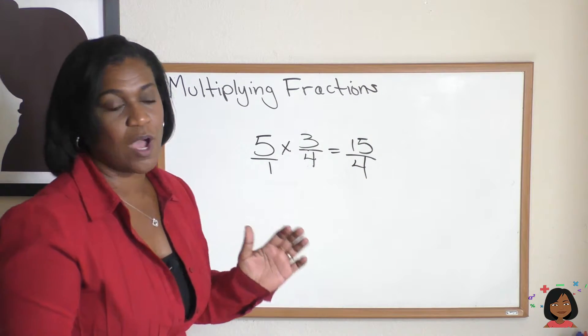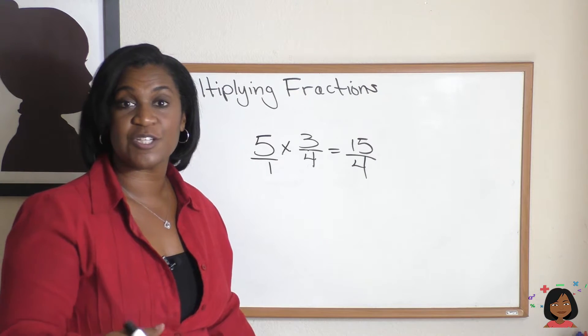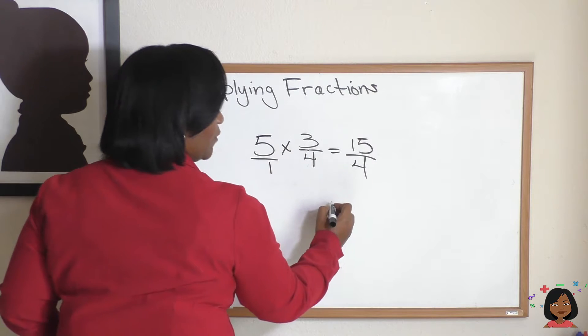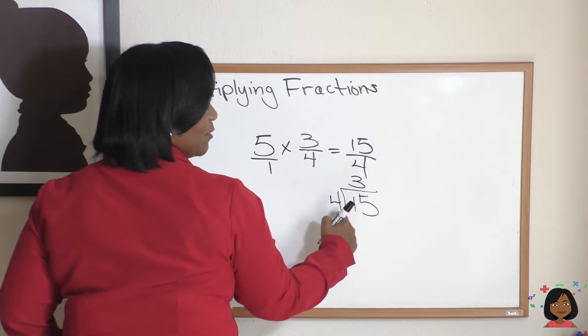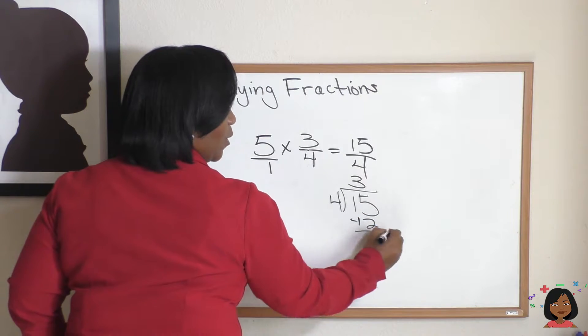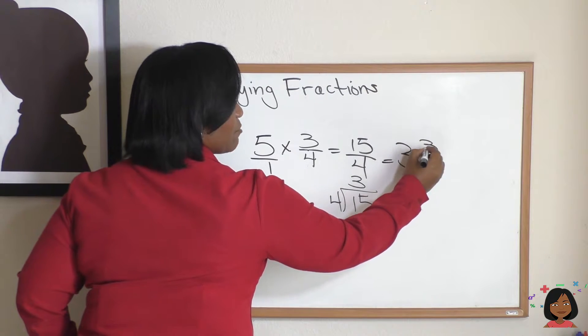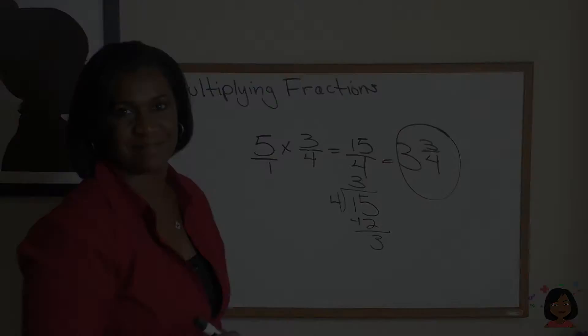Now again, we know we don't really keep it as an improper fraction. We're going to turn it into a mixed number, so we're going to divide. So I'll show you that down here. Four into fifteen, four goes three times. We have twelve, which means three is left over. So our mixed number is three and three fourths.